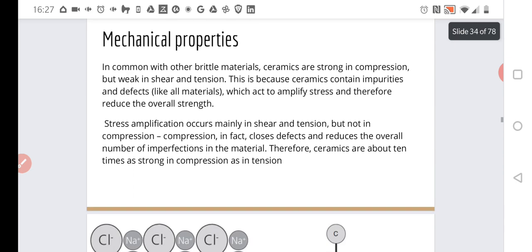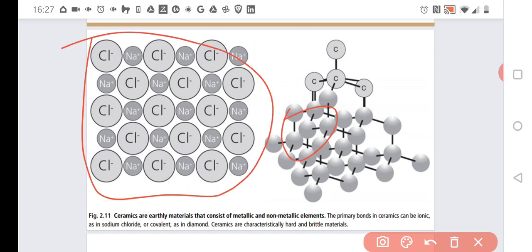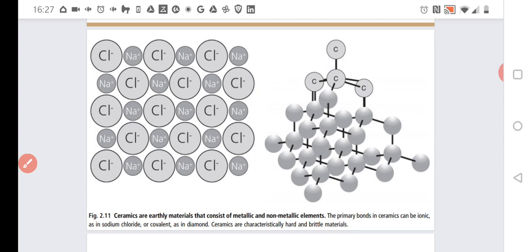What bonds do we have in case of the ceramics? In case of the ceramics, we have two types of bonds possible. We have the ionic bonds or covalent bonds. Those are very strong bonds. Thanks to this, ceramics can approach extremely high stiffness.